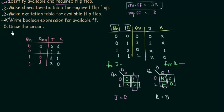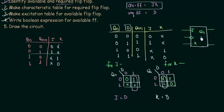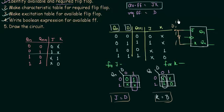Step five is drawing the circuit. We draw the available JK flip-flop with inputs J, K, clock, and outputs Qn and Qn complement. Since J = D, the input D feeds directly into J. Since K = D complement, we add a NOT gate so the complement of D feeds into K. Overall, this gives us a D flip-flop implemented using a JK flip-flop. In the next presentation, we will do more flip-flop conversions.